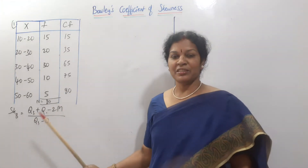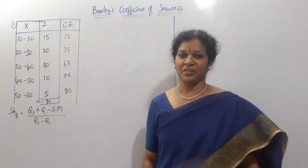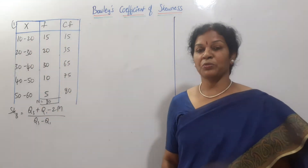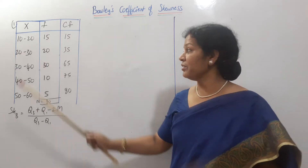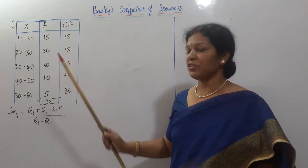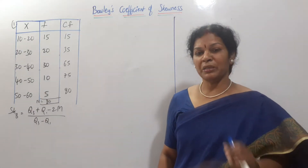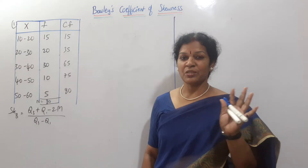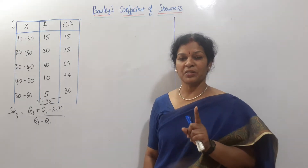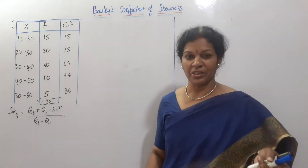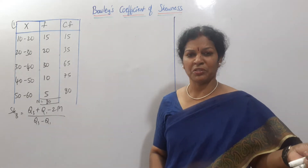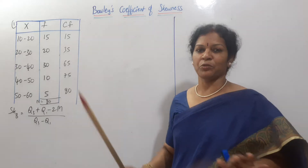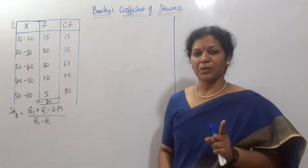We have the median, Q1, and Q3, along with the x value and class interval — this is a continuous series with frequency. The first step is to find the cumulative frequency (CF). I've already done CF as the first step.